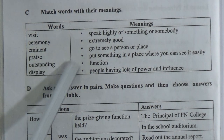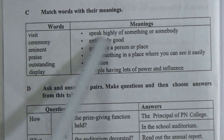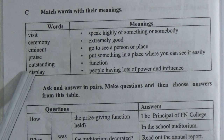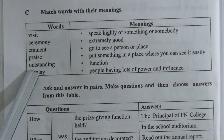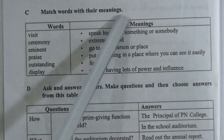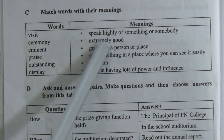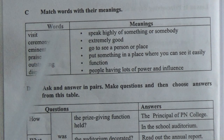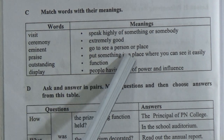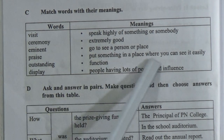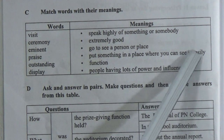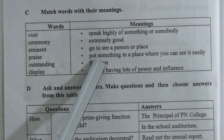And 'outstanding' — match with 'extremely good.' The last one is 'display' — which one is this? Display: put something in a place where people can see it easily. This is all about Task C.